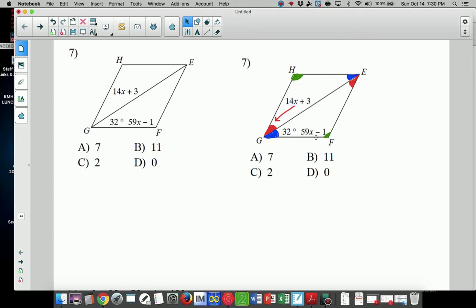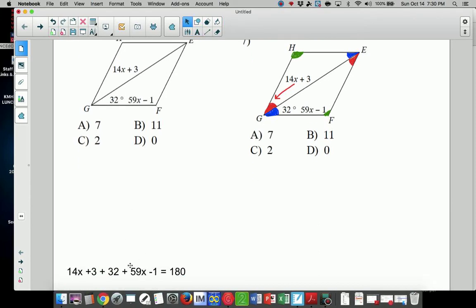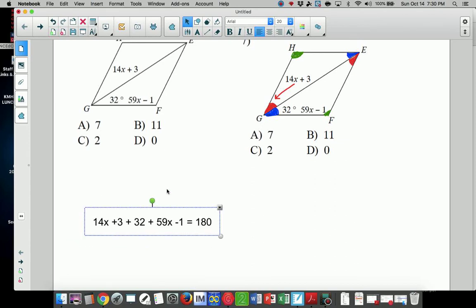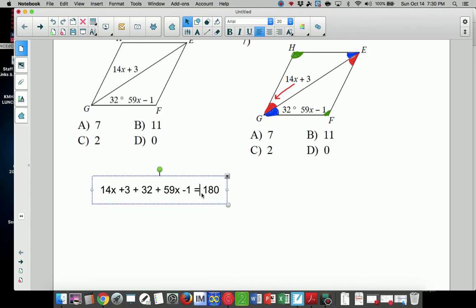Now I'm going to go ahead and apply the properties that I know. I know that if I take all three of those angles and I add them together, it's 180. So let's go ahead and now solve. We have an equation. Let's combine like terms.